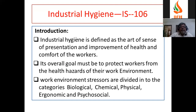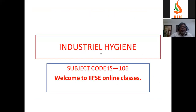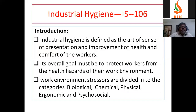Introduction: The IS-106 law on Industrial Hygiene. Industrial hygiene is the science which deals with controlling occupational and physical health hazards. Industrial hygiene is defined as the art and science of preservation and improvement of the health and comfort of the workers.